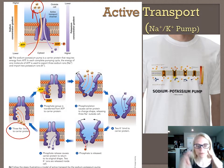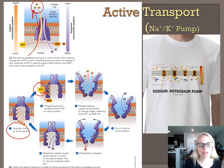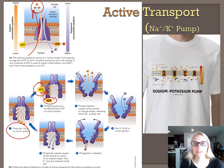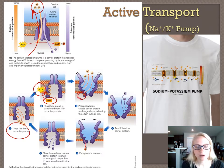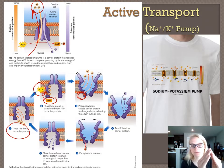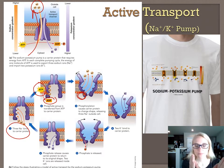Once the sodiums bind, a molecule of ATP comes in. ATP is the energy currency of the cell — we'll learn more about that in Chapter 7. Once that ATP binds, it breaks off one of its phosphate groups and gets converted to ADP. ATP stands for adenosine triphosphate, and when one of those phosphates goes away it becomes adenosine diphosphate, a lower-energy molecule. That third phosphate gets stuck onto the protein. The binding of sodiums, ATP coming in, and breaking off that third phosphate all happen simultaneously and cause the channel to open and kick out those three sodiums.